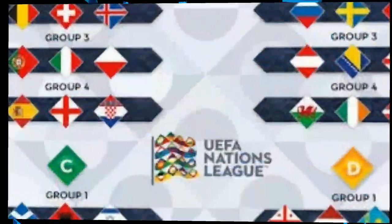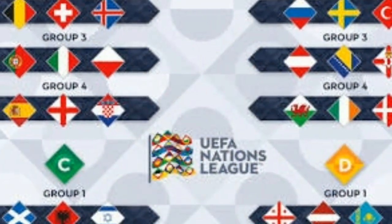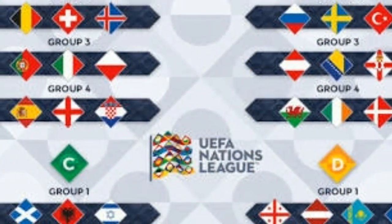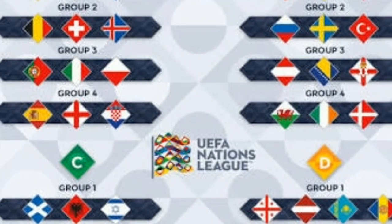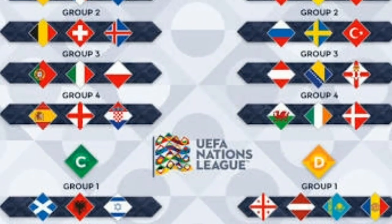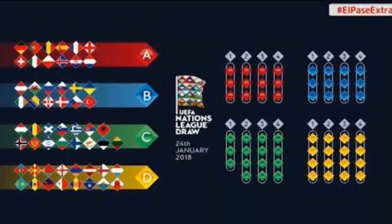League A Group 1: Netherlands, France, Germany. Group 2: Iceland, Switzerland, Belgium. Group 3: Poland, Italy, Portugal. Group 4: Croatia, UK, Spain.